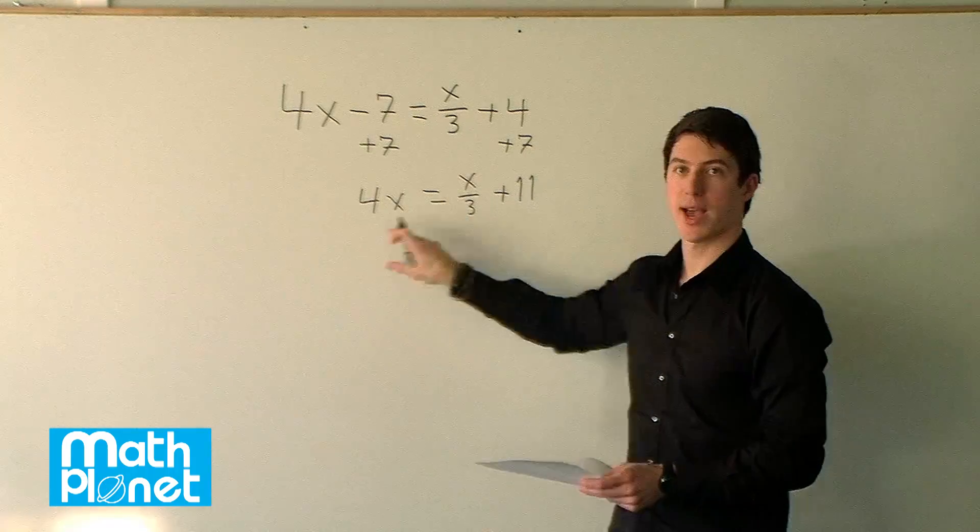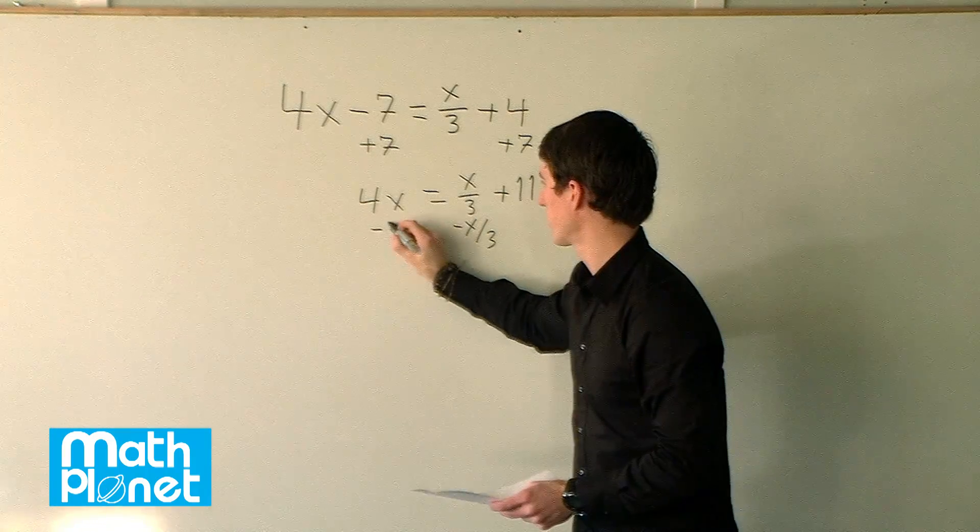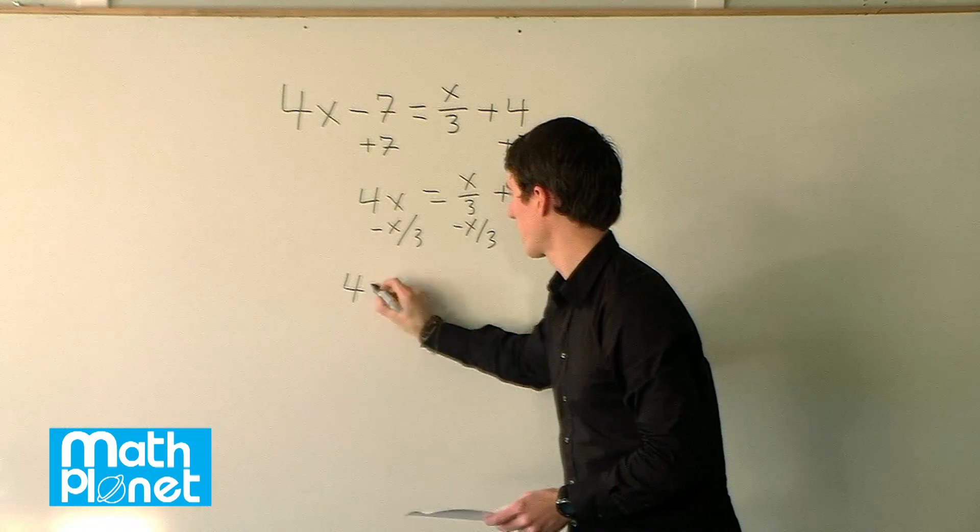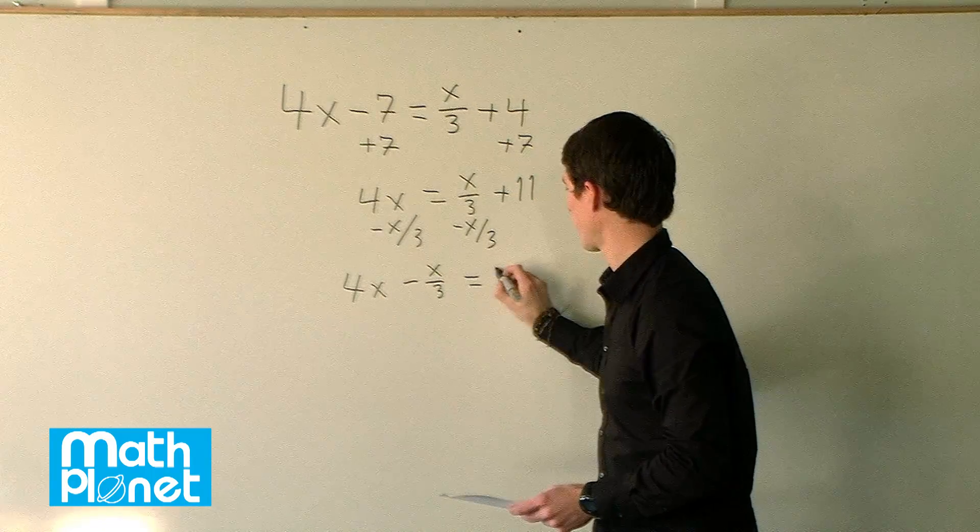Now we want to put the x over here, so we subtract x over 3 from both sides. And then we have 4x minus x over 3 equals 11.